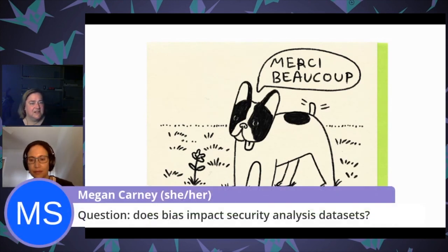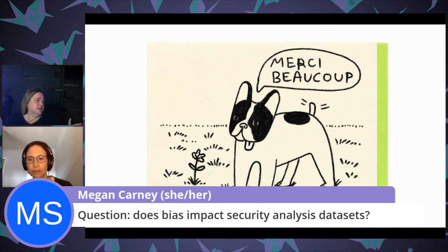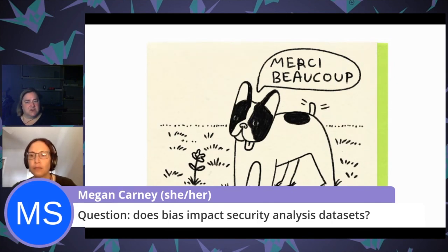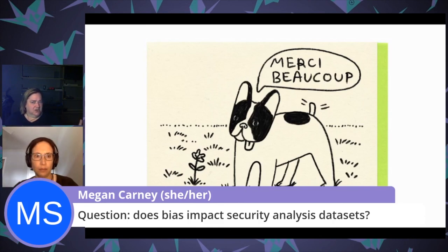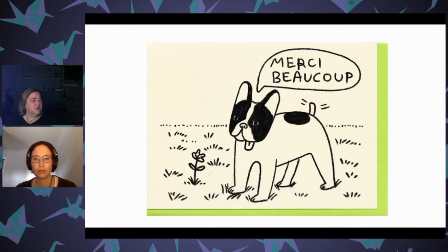Megan asks: does bias impact security analysis data sets? I would say quite possibly, because I know that it's a problem with real-world data sets. There are some known problems with racism being introduced into algorithms. The Algorithmic Justice League is worth searching for. With computer security, with supervised learning where you're getting pre-labeled data sets, if you had some less-than-entirely-accurate data sets going into a supervised learning classification model, it's quite possible that could influence the results. There was a Netflix special about that, and the work that group has done is very impressive.